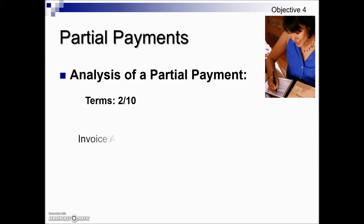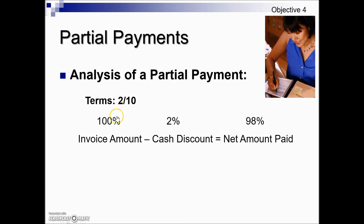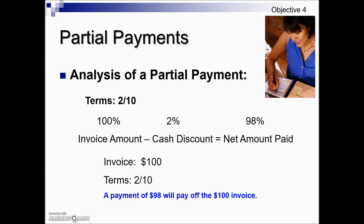We have terms of 2/10 — a 2% discount if paid within 10 days of the invoice date. Here's how those percentages play out: the invoice amount is 100%, the discount allows a 2% reduction, which means the net amount paid is the complement — 100% minus 2% gives us 98%. So a payment of $98 will pay off a $100 invoice, since 2% of $100 is $2.